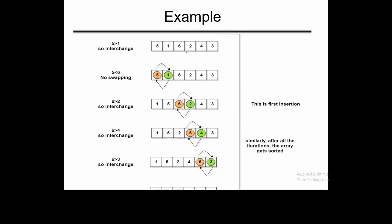Here is an example with the list 5, 1, 6, 2, 4, 3. Initially 5 and 1 are compared; 5 is greater than 1, so swapping occurs. Then 5 and 6 are compared — 5 is less than 6, no swapping. Then 6 and 2: swapping. Then 6 and 4: swapping again. Then 6 and 3: swapping again. After the first pass, the largest element has reached its appropriate position at the last index.